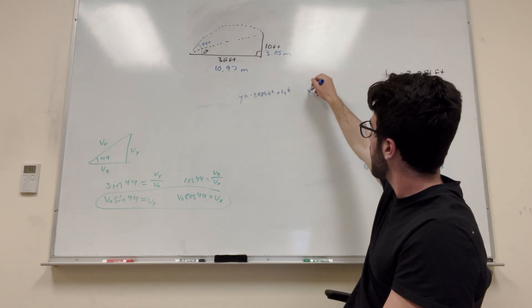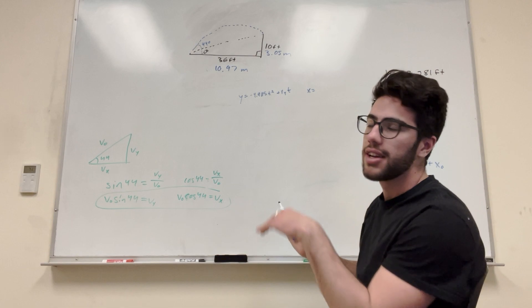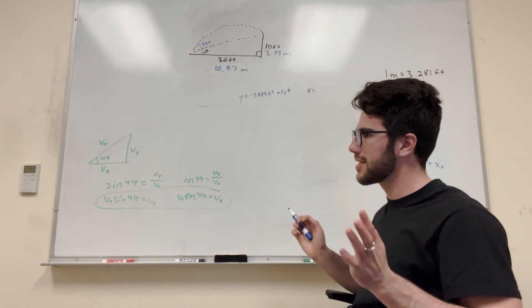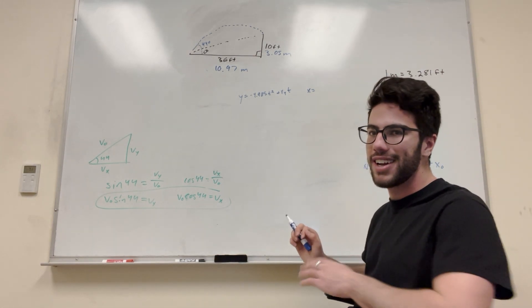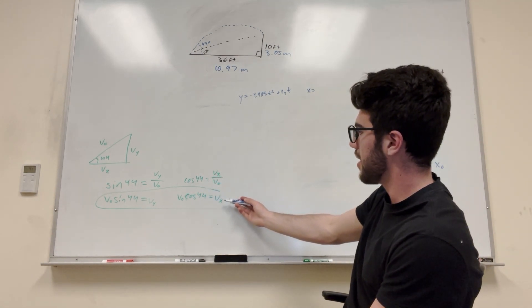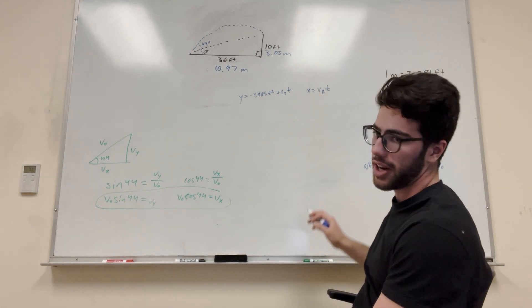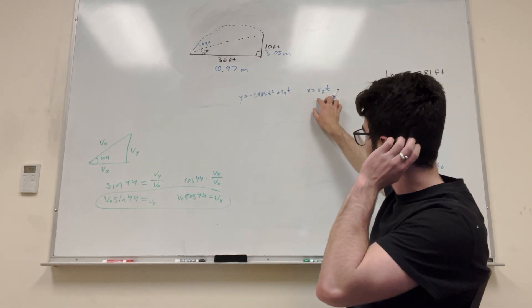So let's do X. X is equal to, X does not have any acceleration on it, right? It's gravity. Gravity is up and down. X does not have any acceleration on it. No gravity we're worried about. So that means that the other thing is the velocity of in terms of effects of X times T, and it's also starting at zero.